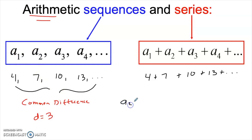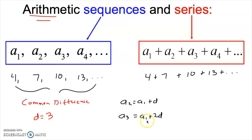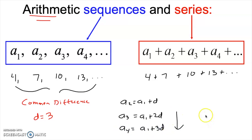So a sub two equals a sub one plus d. To get to a sub three, that's a sub two plus d, which means it's a sub one plus two d. A sub one plus the first d gets you to a sub two; add another d and you get to a sub three. A sub four would require one more d, so it's a sub one plus three d. Hopefully you're starting to see a pattern developing here.